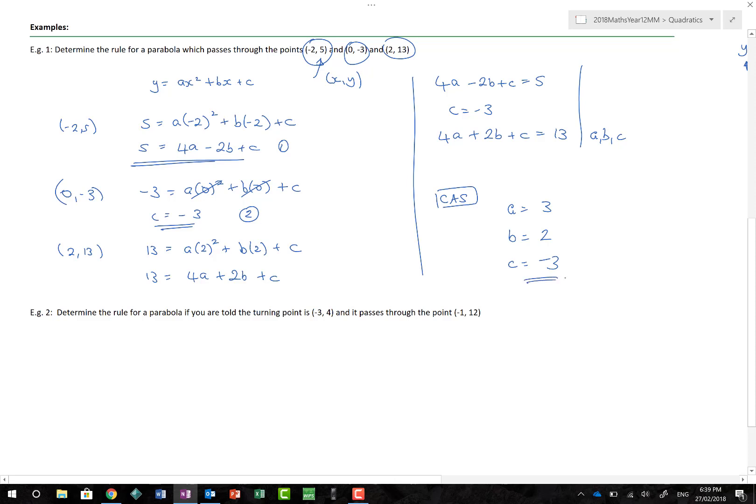So we could now write our equation as y = 3x² + 2x - 3. So that's one way of doing it, using our CAS calculator.